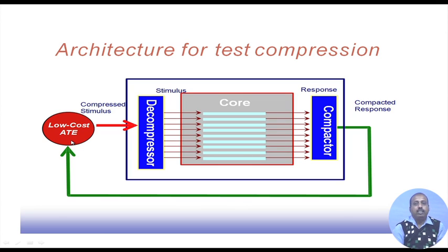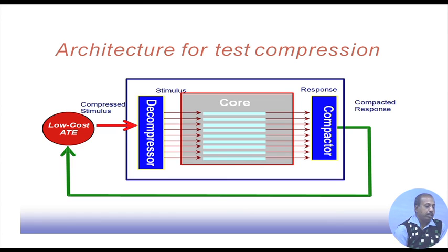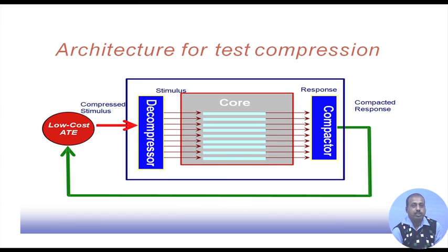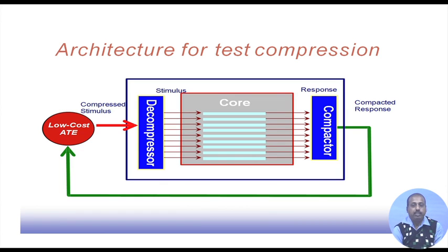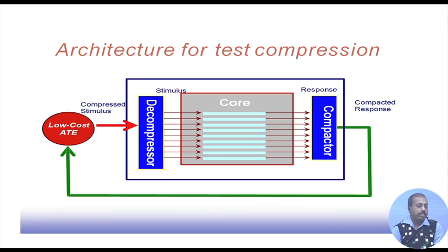This is the typical situation of test compression. We have a low-cost ATE, whose cost is determined by its memory requirement and number of channels. If we are designing new chips with more test patterns or more chip pins for testing, it does not mean we should invest in a new ATE altogether — the ATE investment is a big concern. So we have to use this low-cost ATE itself for testing high-end chips.